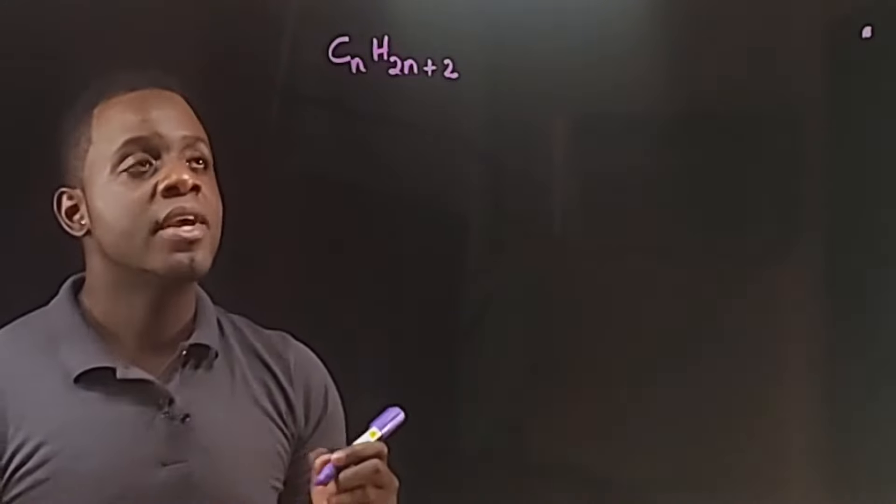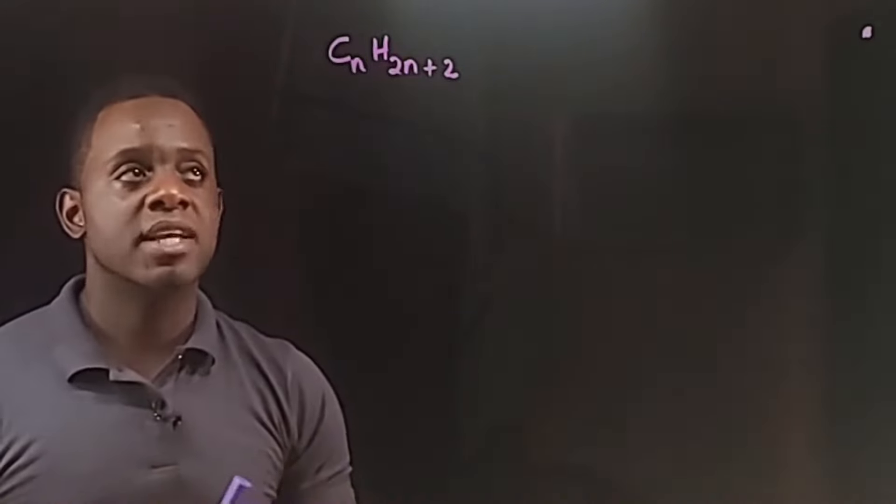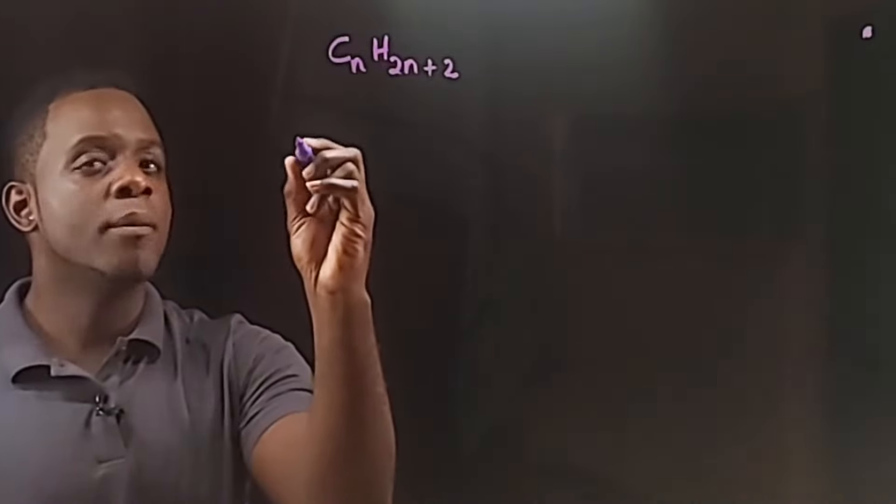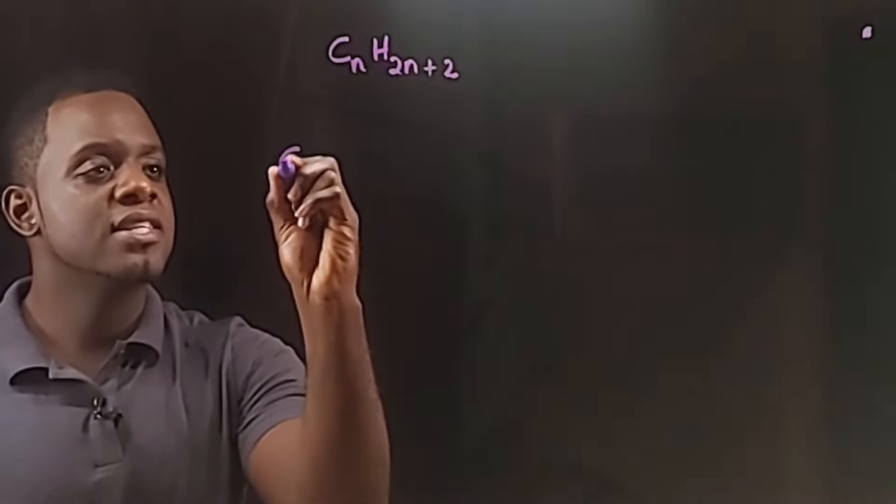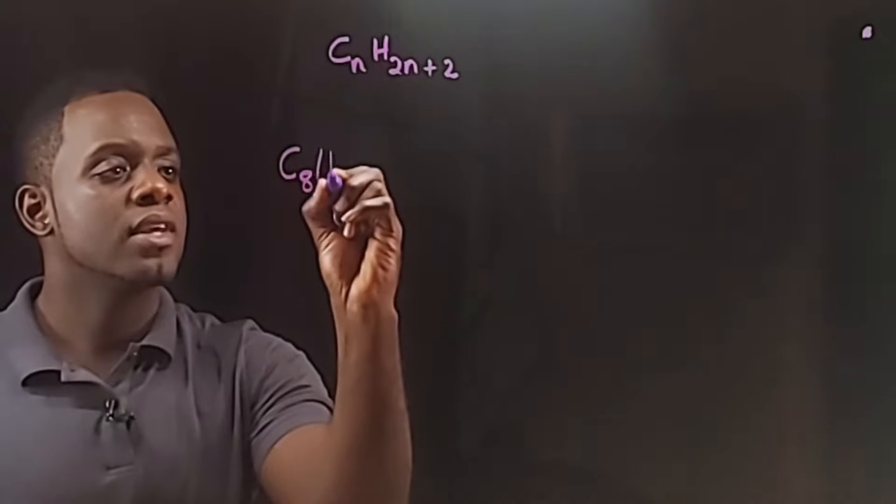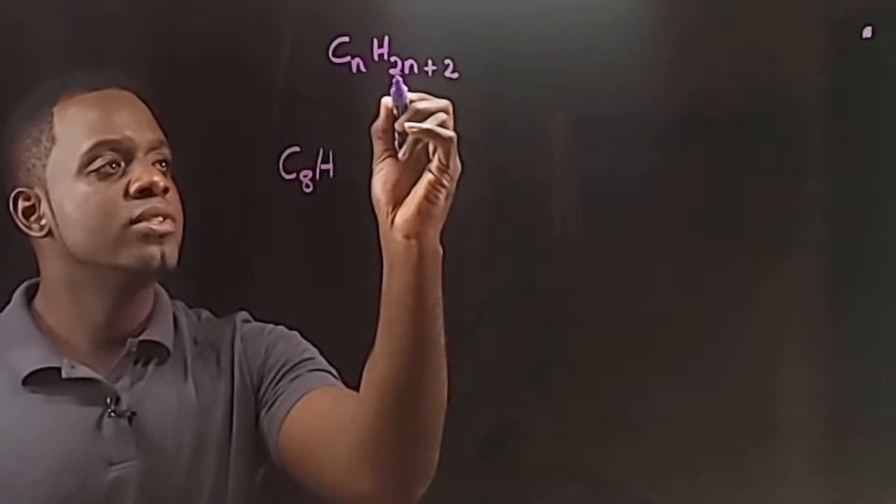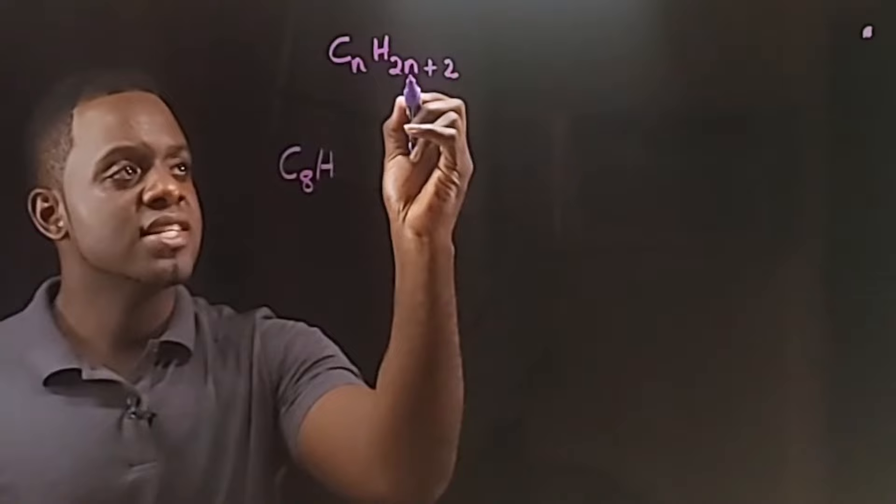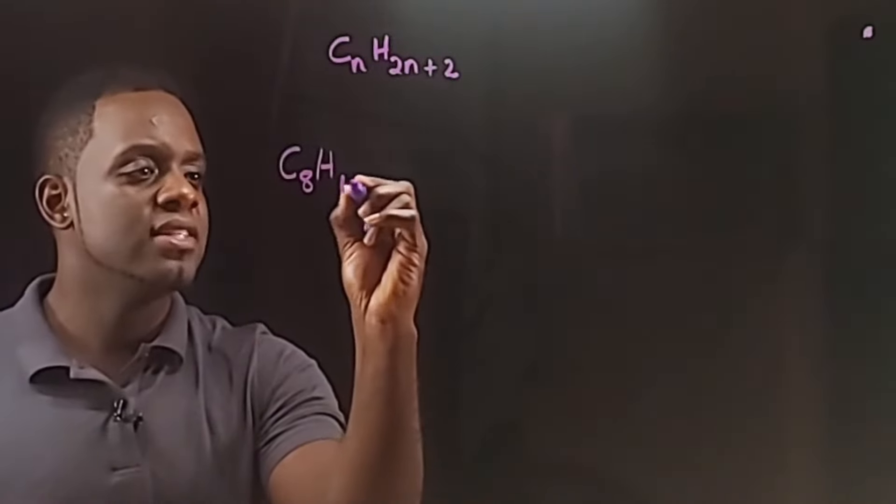We are told in the question that the number of carbon atoms is 8. So the formula for the compound is C8H, and that's 2 times 8 which is 16 plus 2, that's 18: C8H18.